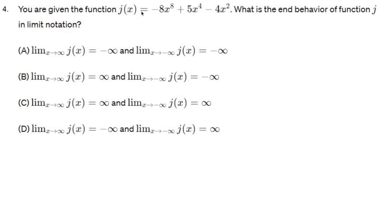You are given the function j of x equals negative 8x to the eighth plus 5x to the fourth minus 4x squared. What is the end behavior of function j in limit notation?